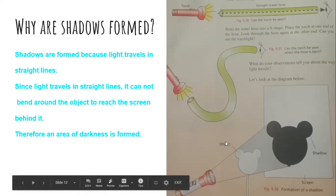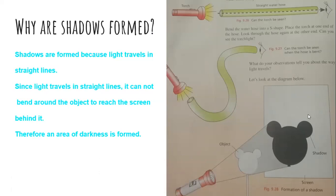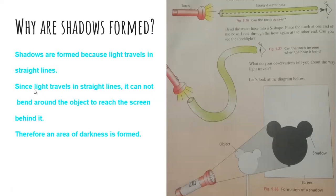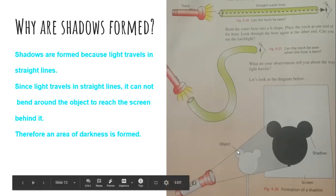For example, light is coming from here. It did not bend and then hit the screen. Rather, what happened was that it travels in a straight line, and this object blocked the light — that is why a darker region is formed. Since light travels in a straight line, it cannot bend around the object to reach the screen, so it reaches in a straight line and therefore an area of darkness is formed.